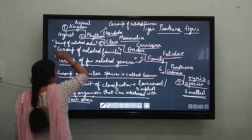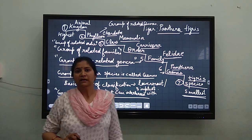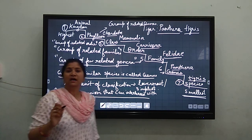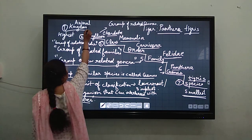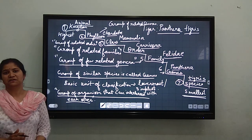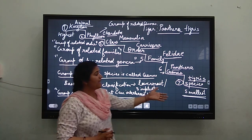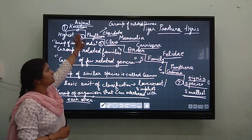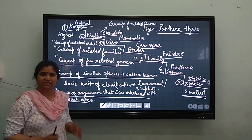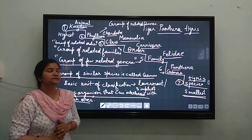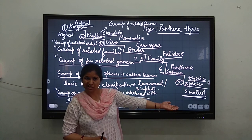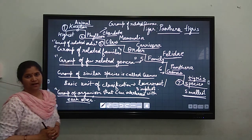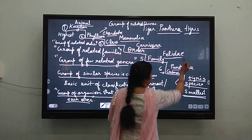Now we are at the highest category, which is the largest group we can make — the animal kingdom. Tiger belongs to which kingdom? It belongs to Animalia. This system of classification in which we make a sequential arrangement of various taxonomic categories, giving a ladder-type organization starting from the smallest basic unit species to the highest unit kingdom, is known as taxonomic hierarchy.